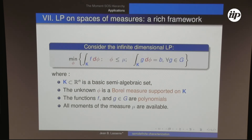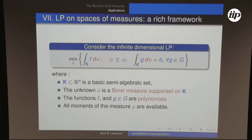To conclude: in the commutative world there is a nice framework of LP on spaces of measures that can capture several problems and to which the moment SOS hierarchy can be applied. The framework is: look for a measure φ satisfying linear constraints given by functions G, with φ possibly dominated by some reference measure.